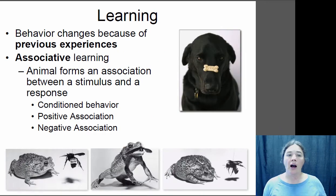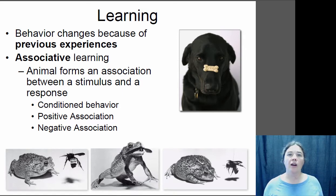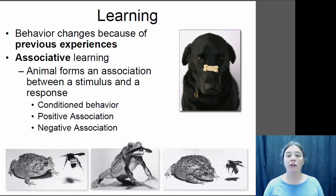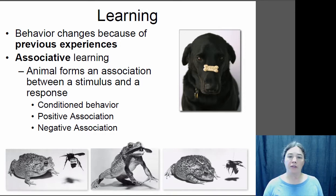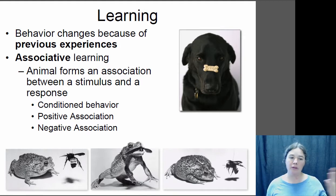A lot of other behaviors are learned through an association between a behavior and some sort of result — this is called associative learning. Those associations can be positive or negative. For example, this dog has learned that if it sits still and balances a biscuit on its nose until released by the human, it gets to eat the biscuit — a positive association. On the other hand, a toad that attempts to eat a bee, gets stung, and in the future avoids bees has a negative association between eating the bee and the painful experience of being stung.